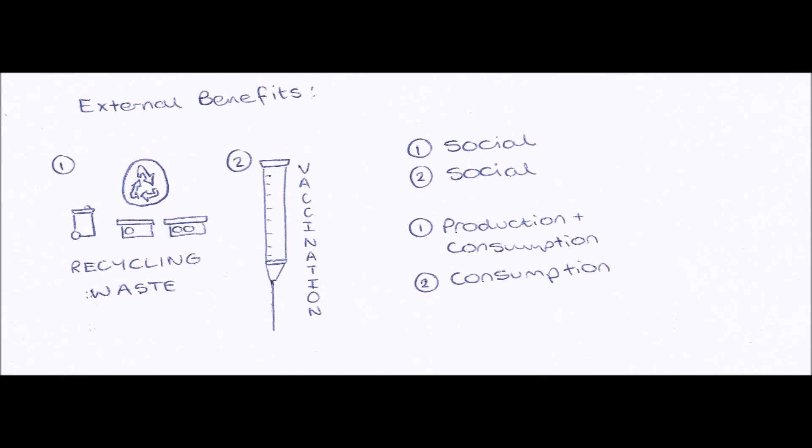Next, we move on to external benefits. So these will be something that is a knock-on effect of production or consumption, but is a good knock-on effect. It has benefits. It is advantageous. So an example here would be recycling waste and vaccinations. So recycling waste, our first one, is a social external benefit.